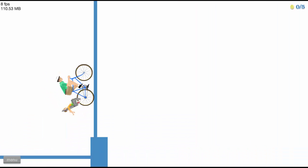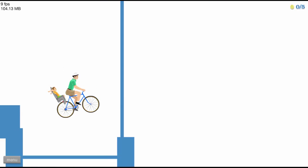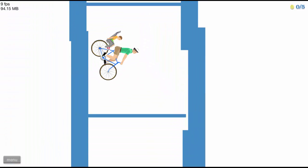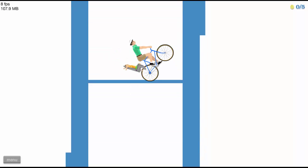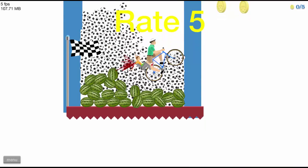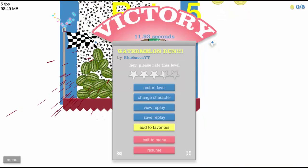And at the moment, as you can see on your screens, I am playing the level I made, my first ever level, the watermelon run. You can search watermelon, go on newest, and that'll be the top one, hopefully. If not, just keep scrolling down, it'll be by Blueback OIT, which is obviously me.